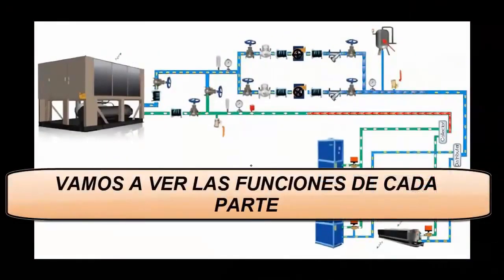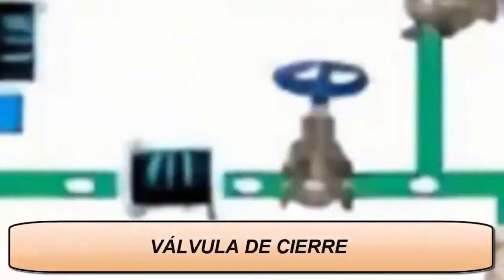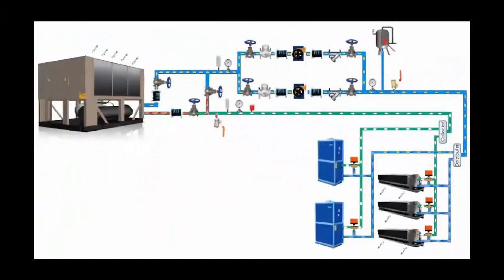Now we are going to define each part of the installation and thus quickly know what they are for. 1. Shut off valve. These valves are used to close the flow of chilled water in the installation. They can be operated manually or automatically. Manual valves are widely used. They generally have a threaded handle to stop and allow fluid to flow through the pipeline.